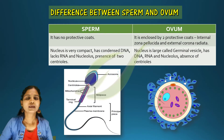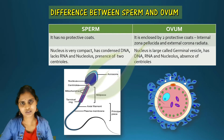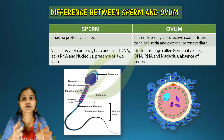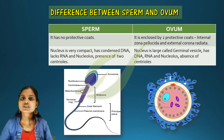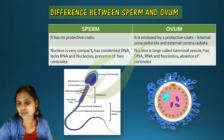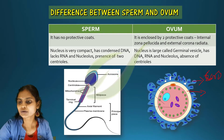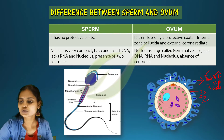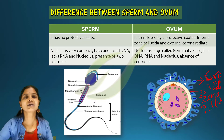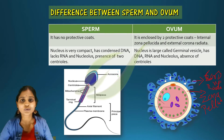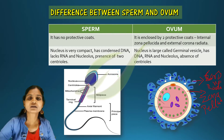In the case of sperm, protective coats are absent — there is no outermost protecting coat. Whereas in the case of ovum, there is a zona pellucida present, and outermost to that is the corona radiata. These two coats protect the ovum.